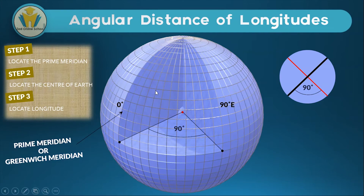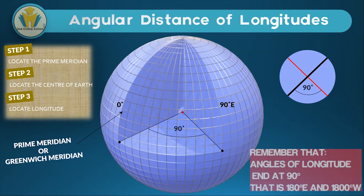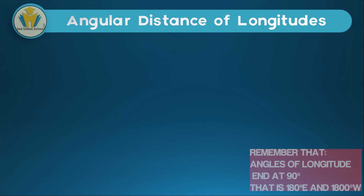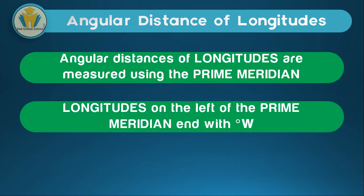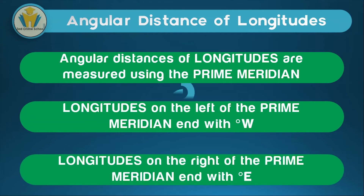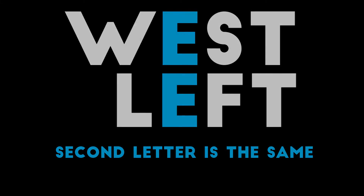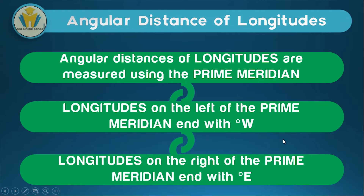This is because the prime meridian cuts the earth into two western and eastern parts. You should also note that angular distances of longitudes are measured using the prime meridian. Longitudes on the left of the prime meridian end with degrees west while those on the right end with degrees east. When you look at the words 'left' and 'west' you notice both have the letter 'e' — so that's how you get to remember which side is the western side, if you get confused.